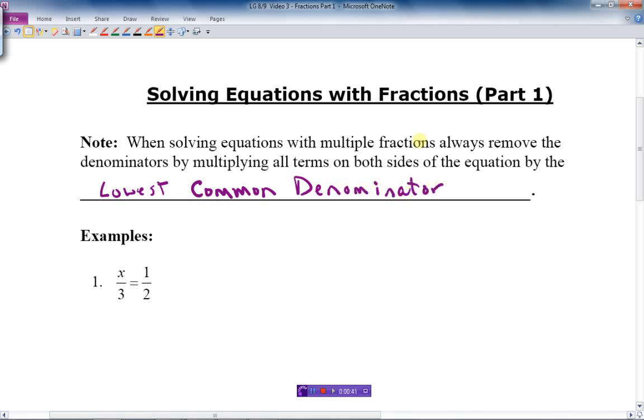Okay. So we're not going to change the fractions to common denominators. We're actually just going to multiply both sides to remove those denominators. We multiply by a number - the number that removes it is the lowest common denominator. We'll see why in a second here.